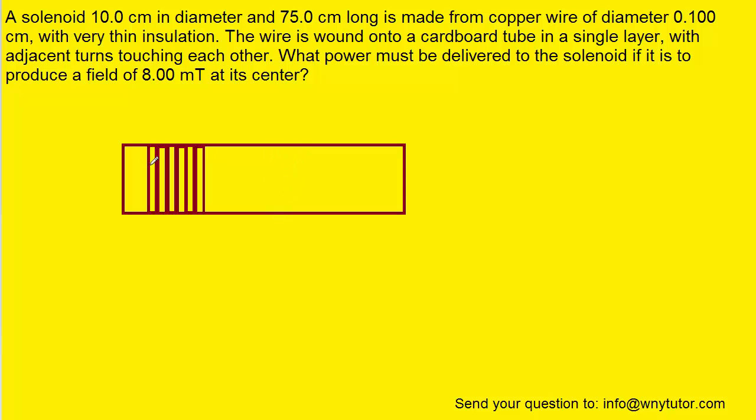Now it turns out that we know the length of each one of these little segments right here. And that simply turns out to be the diameter of the wire. So from here to here is going to be .1 centimeters, or in meters, .1 times 10 to the minus 2. So that's essentially the width of one turn of the wire.